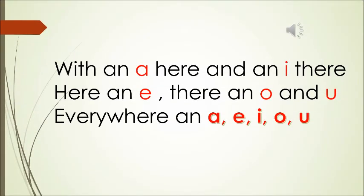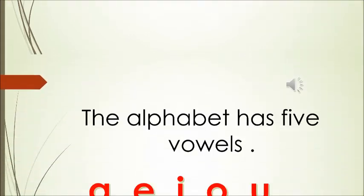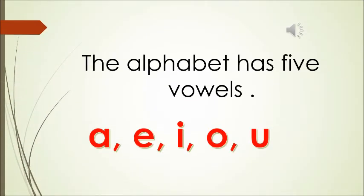With an A here and an I there. Here an E, there an O and a U. Everywhere an A, E, I, O, U. The alphabet has five vowels, A, E, I, O, U.